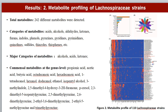We profiled the metabolites of the Lachnospiraceae strains in vitro with GC-MS and SPME-GC-MS-based methods. Figure 2 shows that a total of 242 metabolites were detected, and the major categories are acids, alcohols, and ketones. There are 19 common metabolites at the genus level.